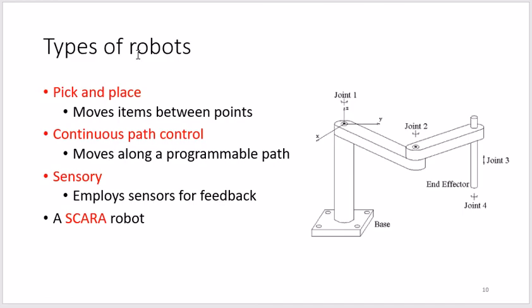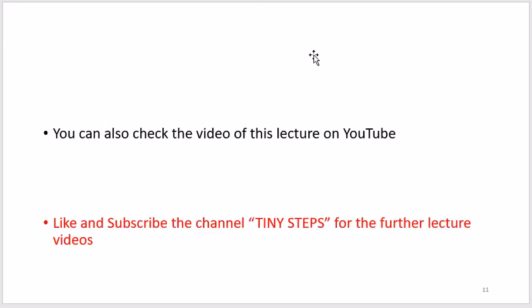There are four different types of robots to be discussed in the next lecture: pick and place, continuous path control, sensory, and SCARA robot as an example. That's all for today — check out the channel Tiny Steps, subscribe, like and share the videos if you enjoy the content. Thank you.